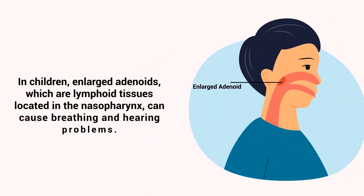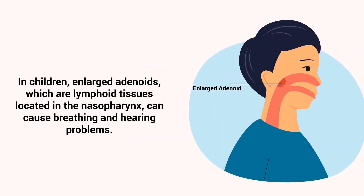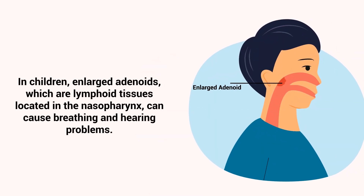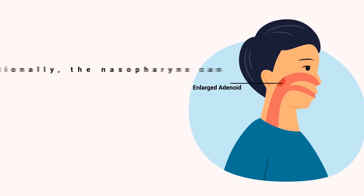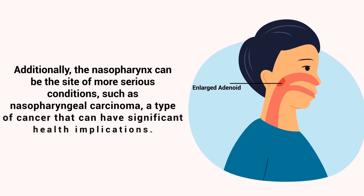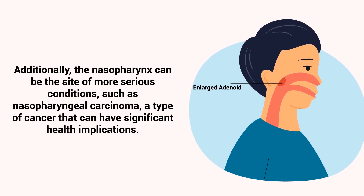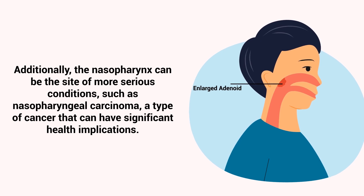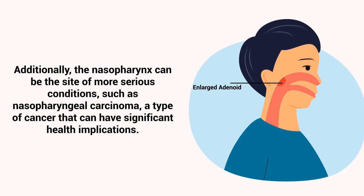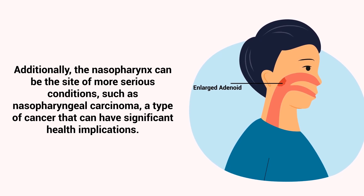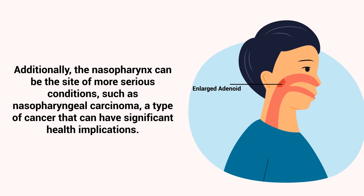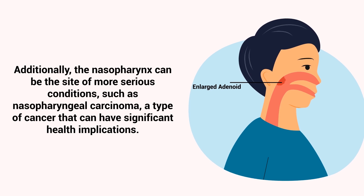In children, enlarged adenoids — which are lymphoid tissues located in the nasopharynx — can cause breathing and hearing problems. Additionally, the nasopharynx can be the site of more serious conditions, such as nasopharyngeal carcinoma, a type of cancer that can have significant health implications.